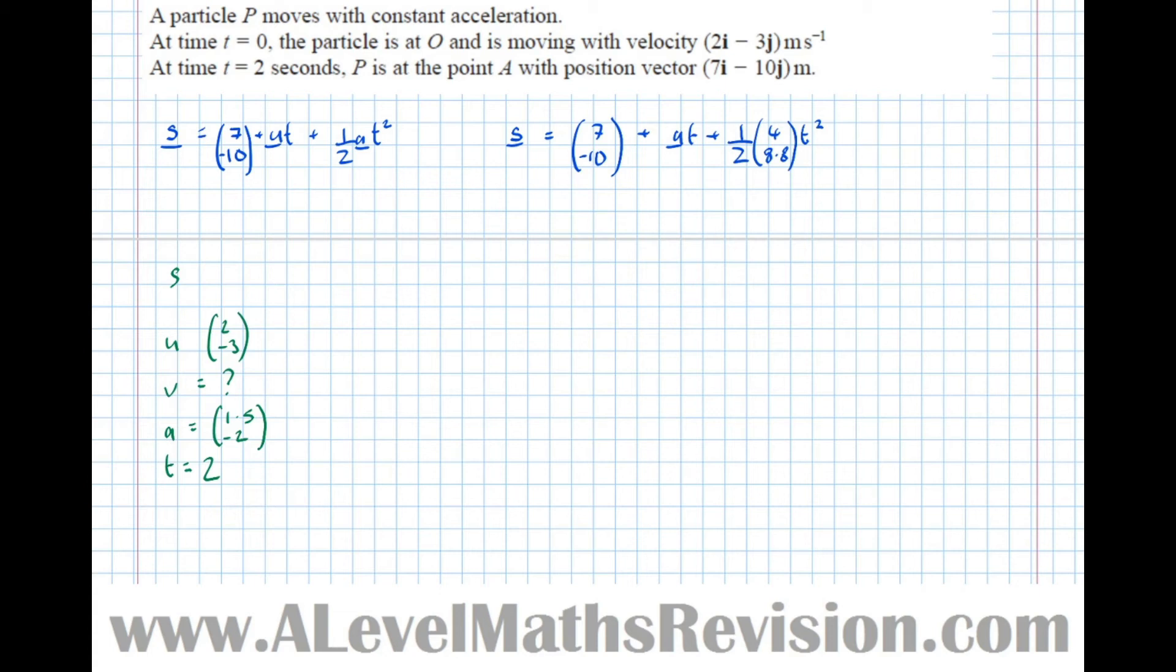So we're ready to find V by just simply using V equals U plus AT. So V equals 2 minus 3 plus 1.5 minus 2 times 2, which equals 5 minus 7. So that's the velocity at A, meters per second.